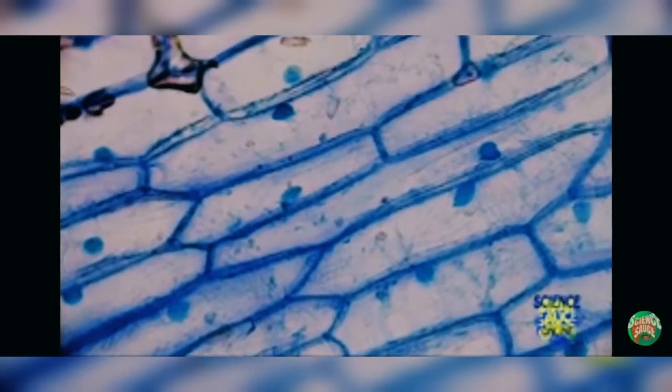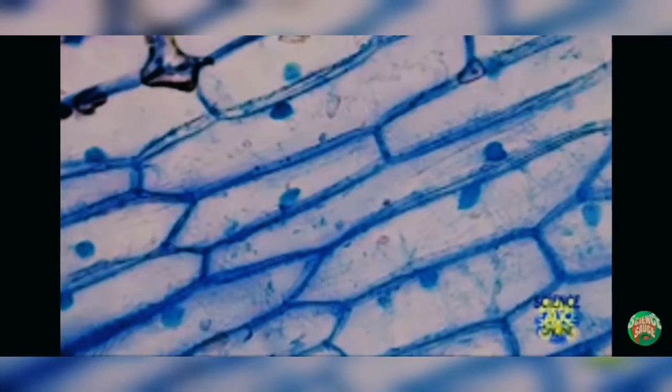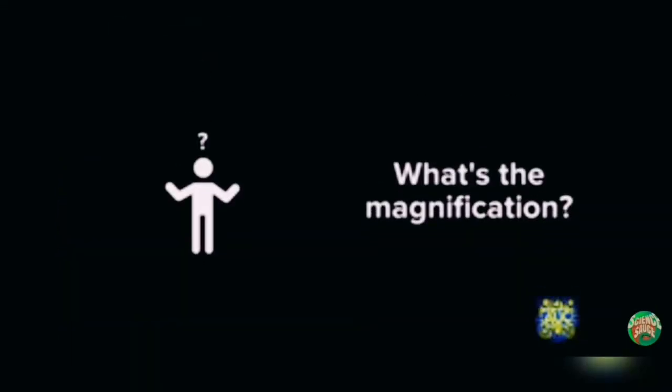So here we can see the onion cells. Some students get confused about what to do. We have to answer questions like what's the magnification and what's the actual size of the object.